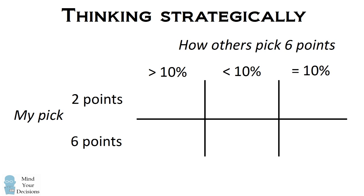We'll construct a matrix based on what the other people are doing to see what your payoff will be. If more than 10% of the class is picking 6, then it doesn't matter whether you pick 2 or 6. Everyone is going to get 0 points. Now if fewer than 10% of the other people are picking 6, say everyone else is picking 2,